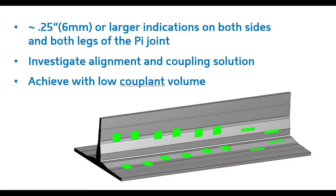The key goals we had on the application: we had a sample set with some defects, about a quarter inch in size, on both the legs of the PI joint and the vertical of the PI joint. We were looking at doing an inspection to allow us to use a low volume coupling, and also investigate some different coupling solutions between contact and immersion and bubbler systems.